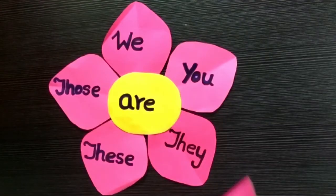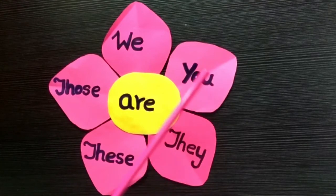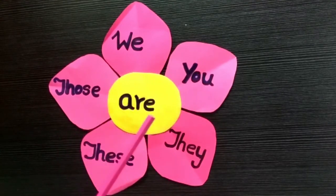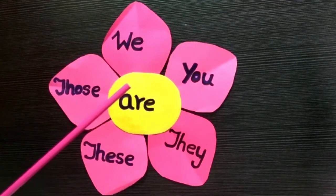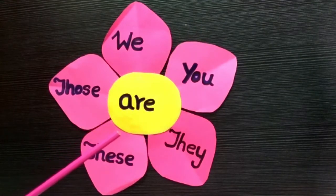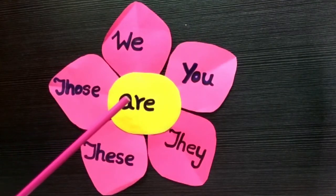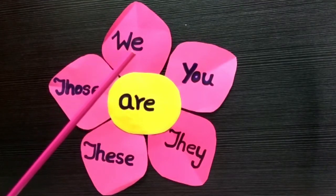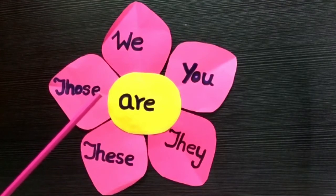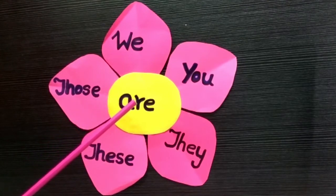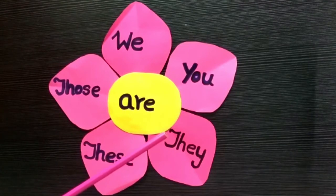Now, do you see this pink flower? Are also has five best friends: We, You, They, These, Those. So we always use Are with We, You, They, These and Those. Are is used for plural nouns.